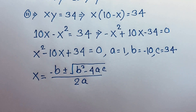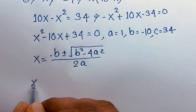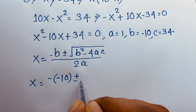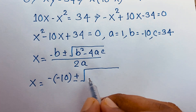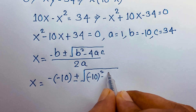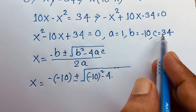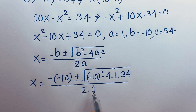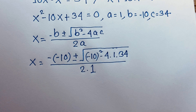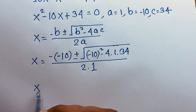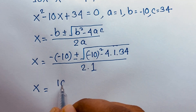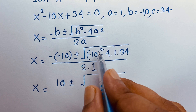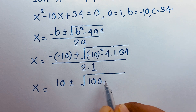Applying this formula: x equals minus b, and b is negative 10, so minus of negative 10 gives plus 10, plus or minus square root of b squared — that is minus 10 whole squared — minus 4ac, where a is 1 and c is 34, over 2a where a is 1. Now, 10 to the power 2, since the power is an even number it is always positive, so this is 100 minus 4 times 34.